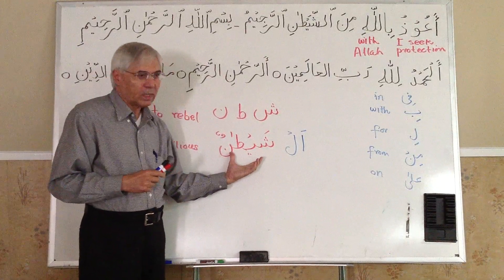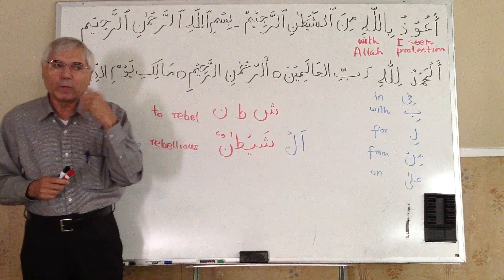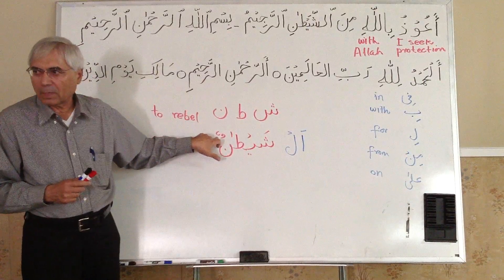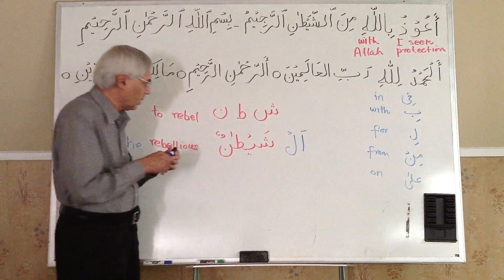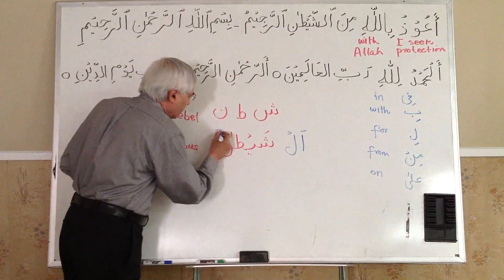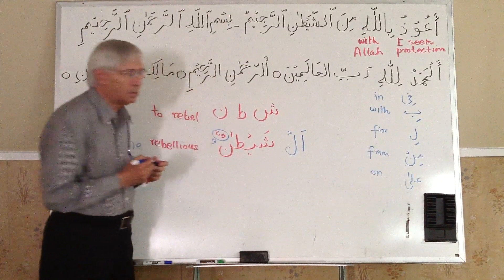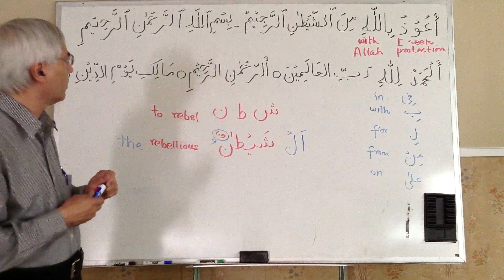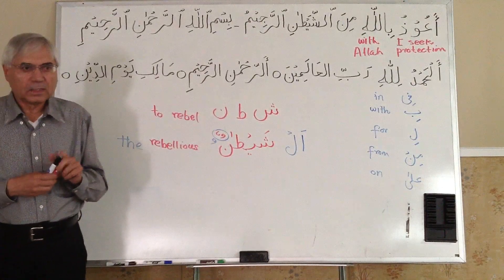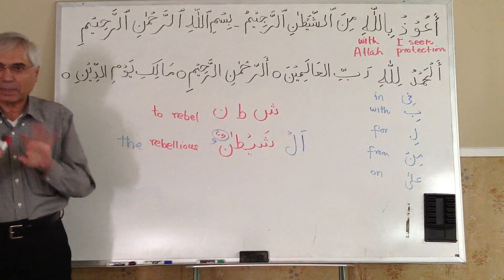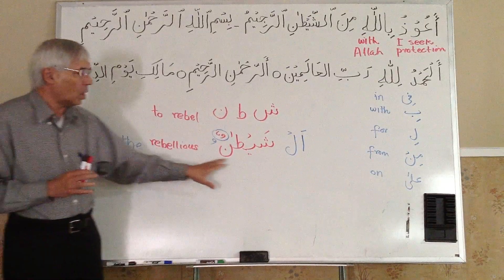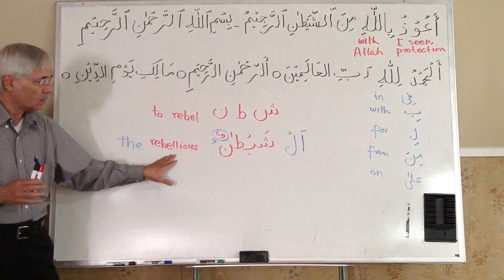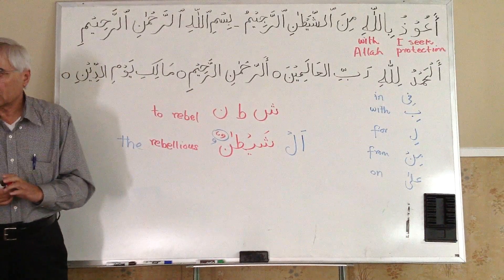Al, and the word is Shaitanun. But we also learned that whenever we put an Al, the last two dhammas change into one. So this will become Al-Shaitanu. Separately the word is Al and Shaitanun, but when you combine them together it will be Al-Shaitanu.